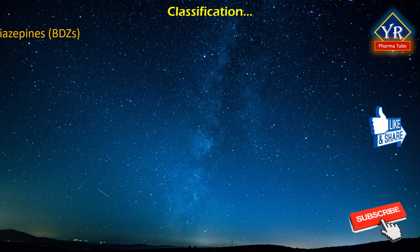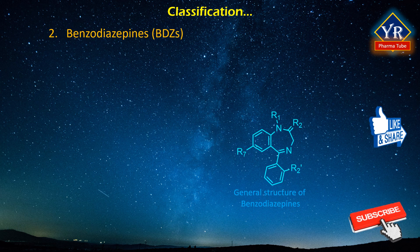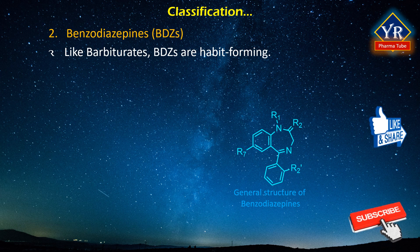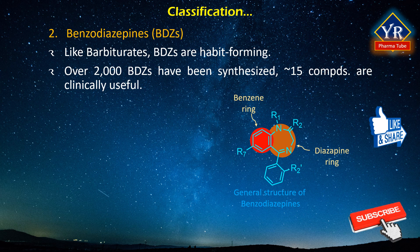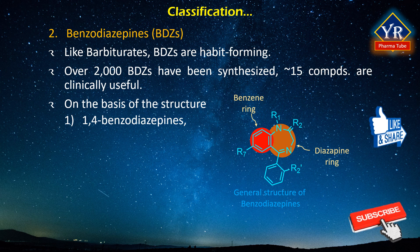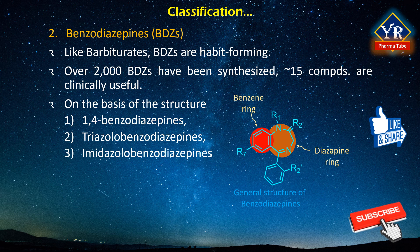The second class of agents are benzodiazepines, abbreviated BDZ. There are a number of compounds which do not possess the malonylurea or barbiturate structure but exhibit marked sedative-hypnotic activity very similar to that of the barbiturates. Like barbiturates, these are habit-forming to varying degrees. The basic chemical structure of benzodiazepines consists of a benzene ring coupled to a seven-membered heterocyclic structure containing two nitrogens — that is, diazepine — at positions 1 and 4. Of the 2000 benzodiazepines that have been synthesized, approximately 15 clinically useful compounds are on the market in the US. They may be grouped as 1,4-benzodiazepines, triazolobenzodiazepines, imidazolobenzodiazepines, and others.